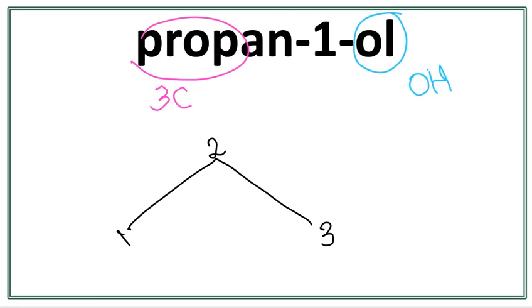Now, we have this one here. This tells us that this OH, this alcohol group, is attached on the first carbon.